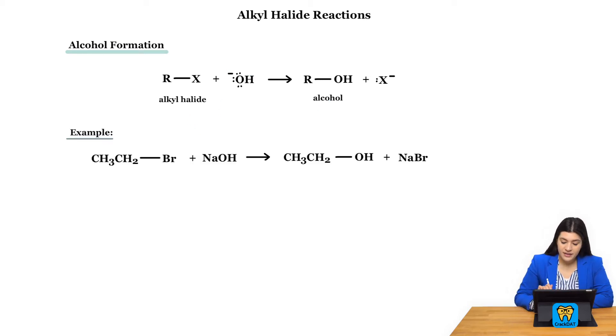For example, it could look something like this where we have our alkyl halide. We're adding a strong base, NaOH, and then from there all that's happening is essentially these two are combining, the Na and Br which we have here, and then this OH is replacing that halogen and we get our alcohol.